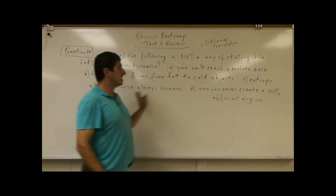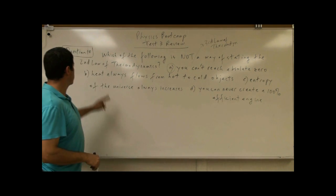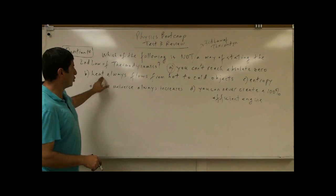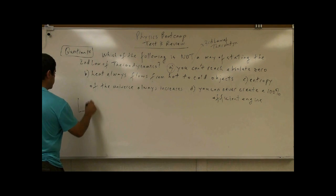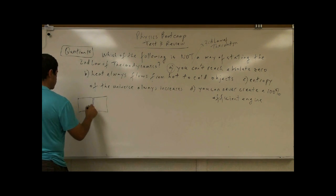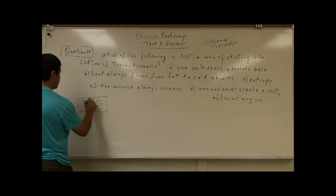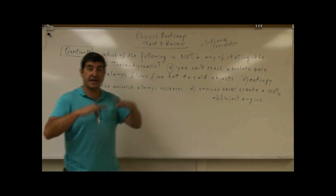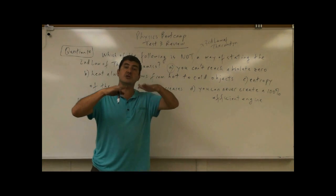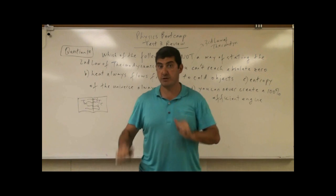All of the other choices are restatements of the second law. B — heat always flows from hot to cold objects. So if you had a hot object and a cold object and you touch them, heat flows from hot to cold so that the two objects will come to equilibrium.